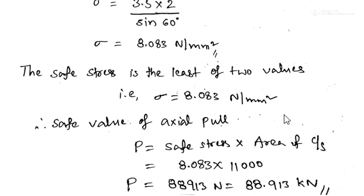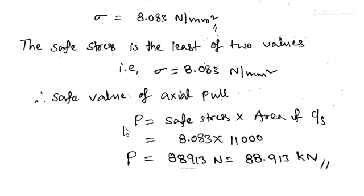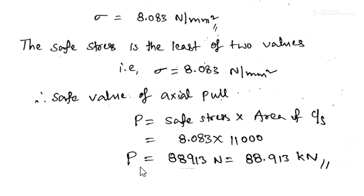From the safe stress, we find the safe value of axial pull. Using: load = stress × area of cross section. Safe load P = 8.083 × 11,000 mm² = 88,913 N, or equivalently 88.913 kN. This is the safe value of the axial load P.